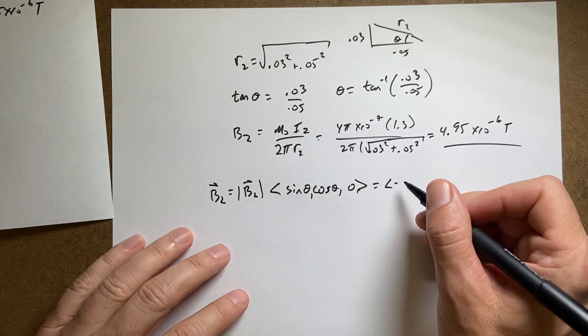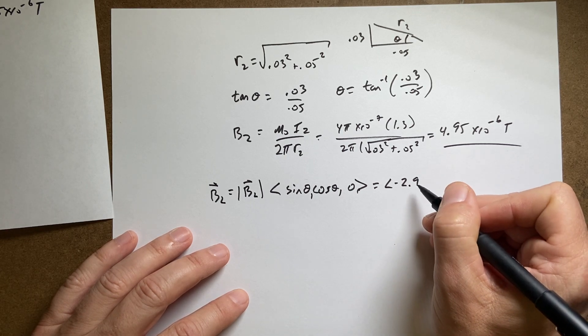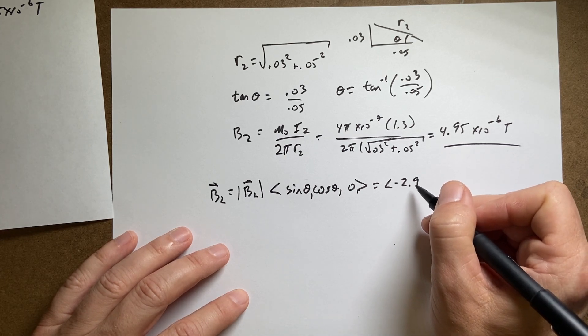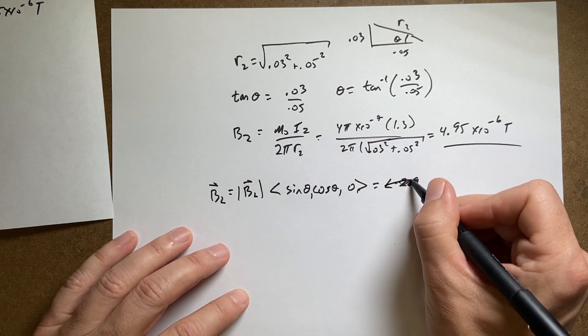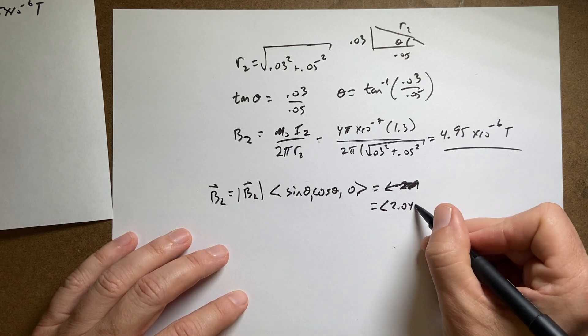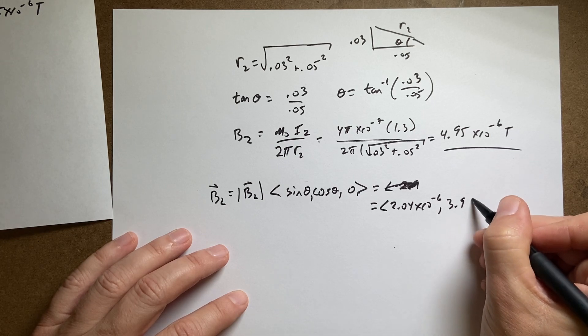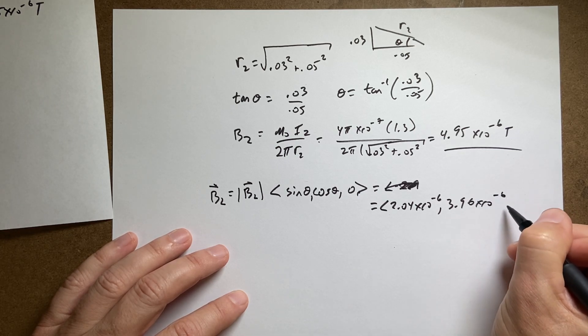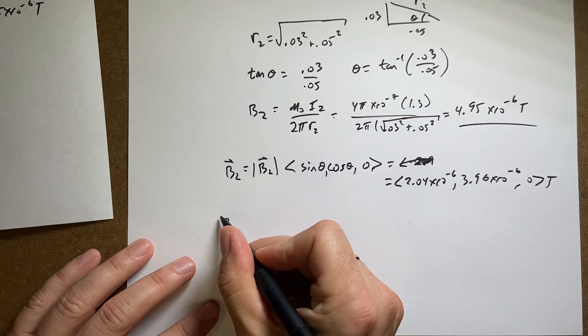If you put in your value of θ and take the sine and cosine of it, I get 2.04 × 10⁻⁶ and I get 3.96 × 10⁻⁶, zero Tesla.